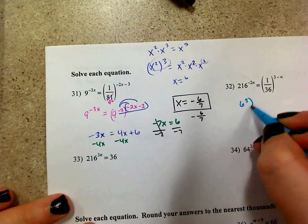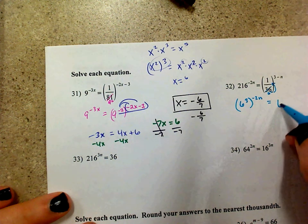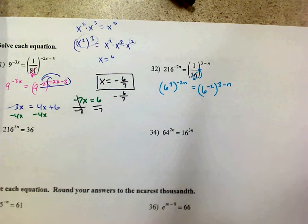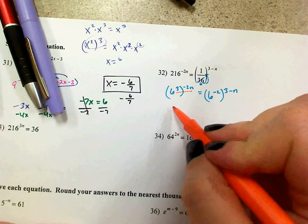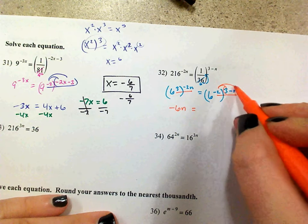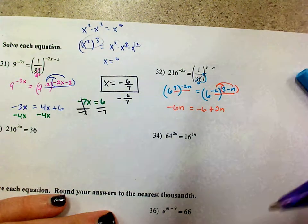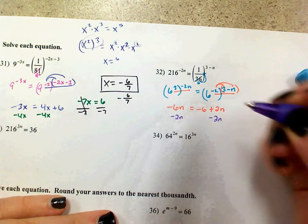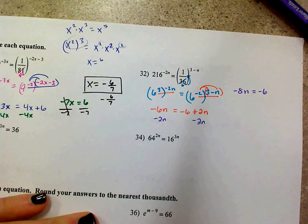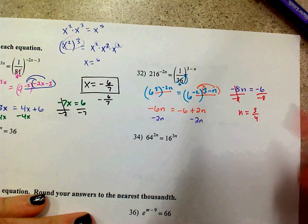This is the same thing as saying 6 cubed to the negative 2n, and 36 is 6 squared, so I bring it up to the top as 6 to the negative 2, to the 3 minus n. The bases are the same, so I don't have to deal with them anymore. I'm just dealing with negative 6n — because we multiply — equals negative 6 plus 2n after distributing. Subtract 2n from both sides: negative 8n equals negative 6. Divide by negative 8, and you get positive 3/4. Six-eighths simplifies to 3/4.